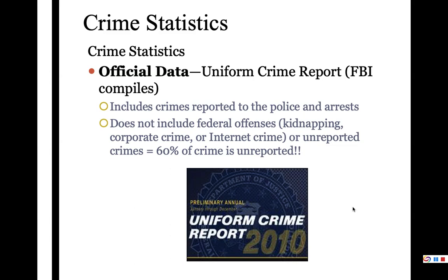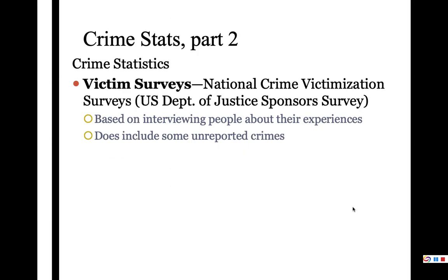that almost 60% of all crime is unreported. So let me ask you this, class: if this official data does not include federal offenses but only includes crimes reported, how can I tell you with any confidence that more than half of all crime is not reported? Well, the reason is because of this other source of information about crime — victim surveys. The National Crime Victimization Survey, administered by the U.S. Department of Justice, is where they randomly contact lots of people in the United States and ask about their experiences. It's not perfect, but based on this they get a sense of how much crime is unreported.